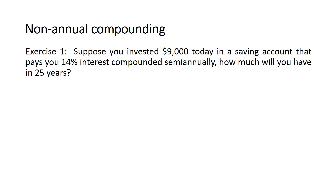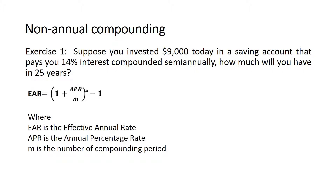Let's look at exercise one. It says suppose you invested 9,000 dollars today in a saving account that pays 14% interest compounded semi-annually — how much will you have in 25 years? This is a future value exercise except that the interest rate is compounded semi-annually, meaning two times a year. We should first adjust the interest rate from the annual percentage rate (APR) into the effective annual rate (EAR) using this equation.